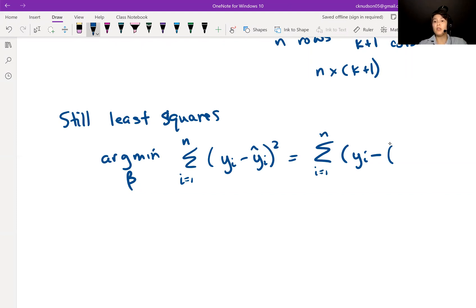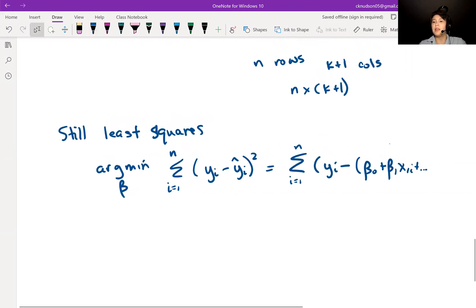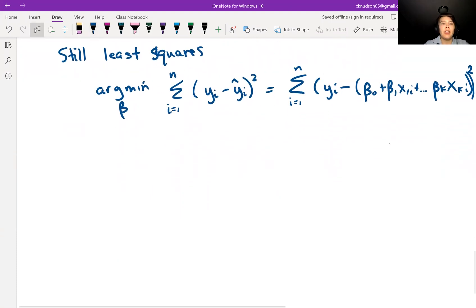Well, what is yi hat equal to? yi hat is beta naught plus beta 1 x1i plus all the way down to beta k xki. So we're getting each of these residuals, squaring them and adding them up. And we're looking for the betas that will minimize this.